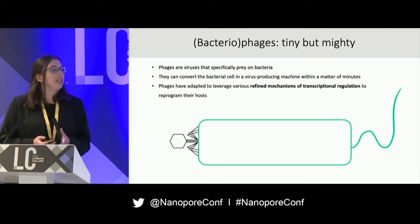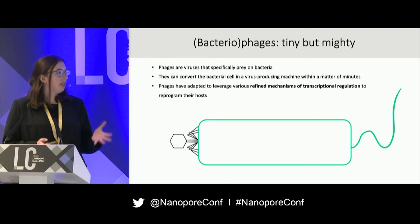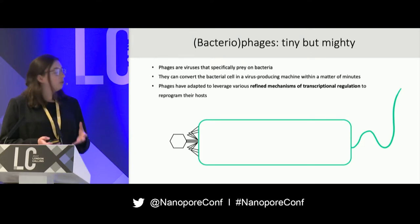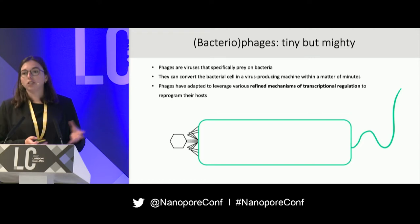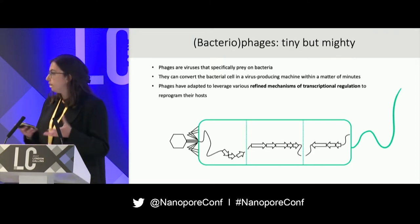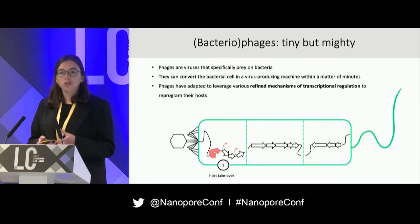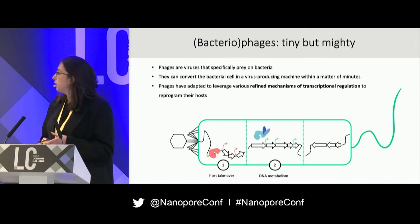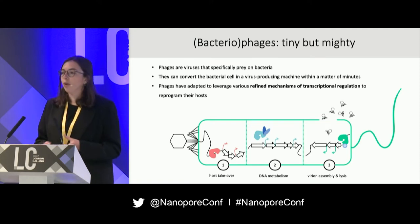We find phages very interesting because they are able to infect and convert their bacterial host cell into a virus-producing machine within a matter of minutes. When the phage finds its host cell, it injects the genetic material and starts transcription in a very systematic way — initially expressing a subset of early genes that help with host takeover, whereafter the phage replicates itself and new virus particles escape the cell to start another round of infection.